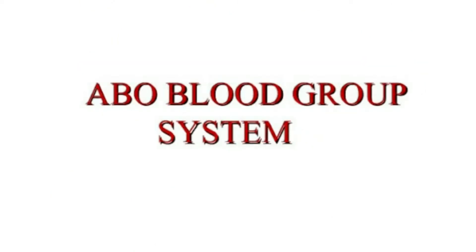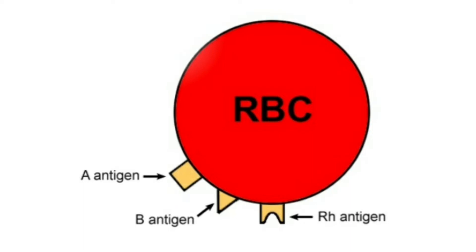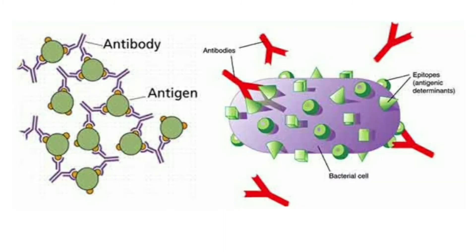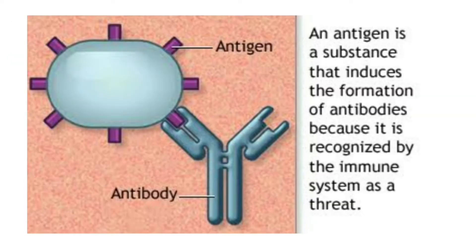The human blood group system is the ABO blood group system. Antigens are large protein molecules present on the surface of the RBC. They are also present on the surface of bacteria and some non-living substances such as toxins and chemicals. Antigens stimulate the body to produce another kind of proteins called antibodies, which are produced in the body in response to antigens. Each antibody binds to a specific antigen, just like how a key fits into a lock. Antibodies are present in the plasma.